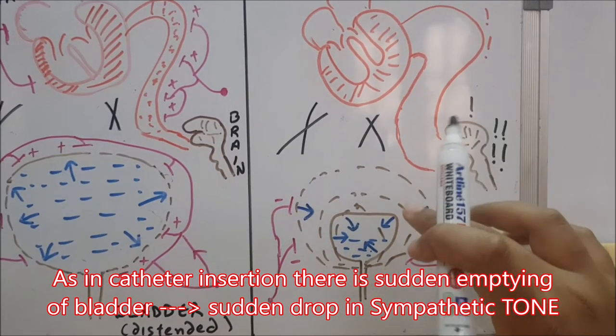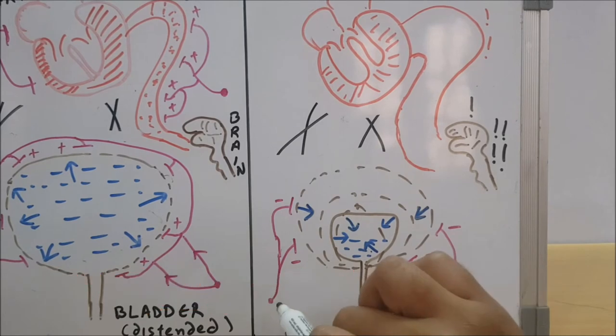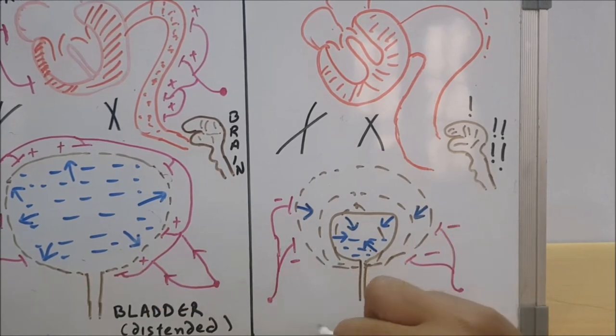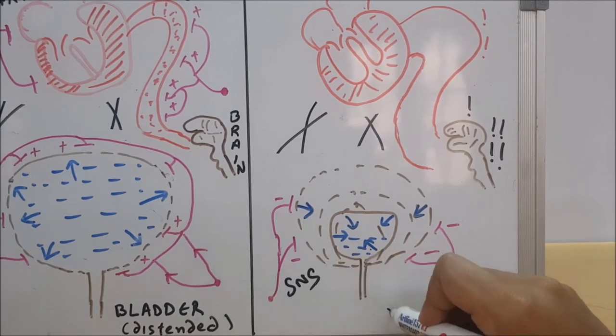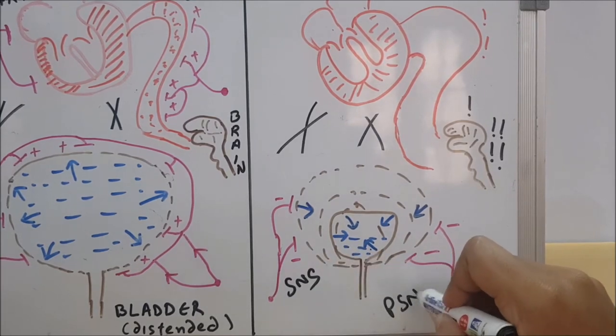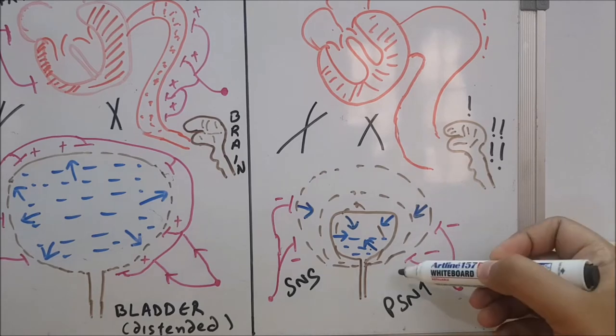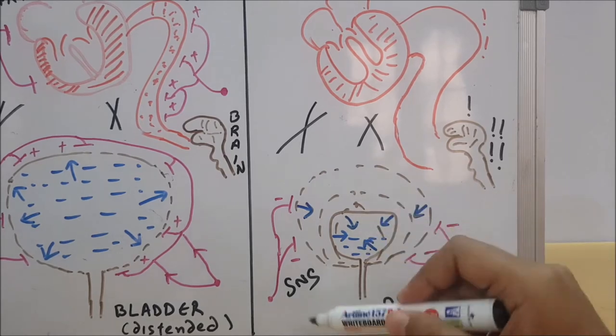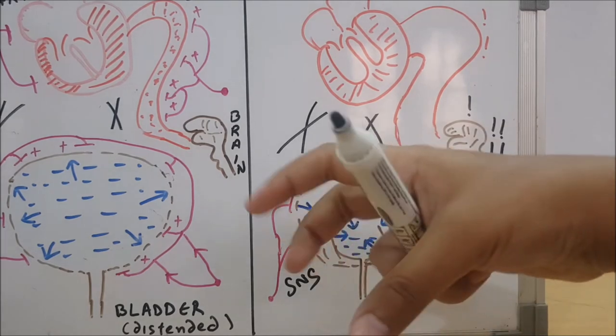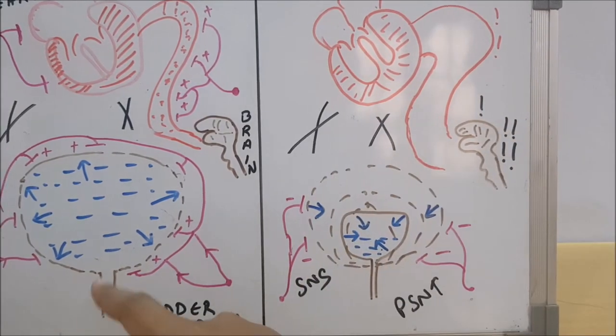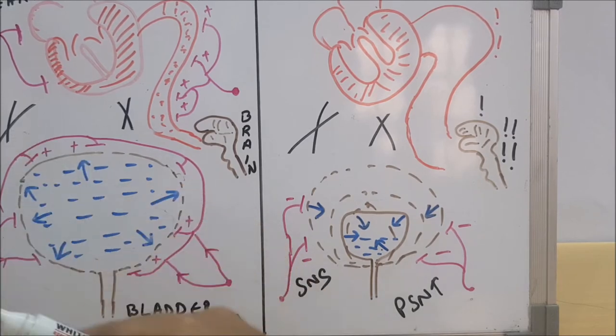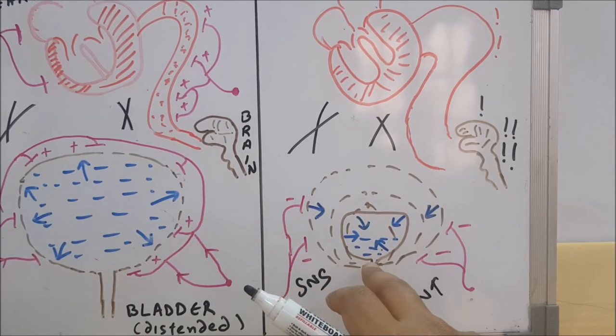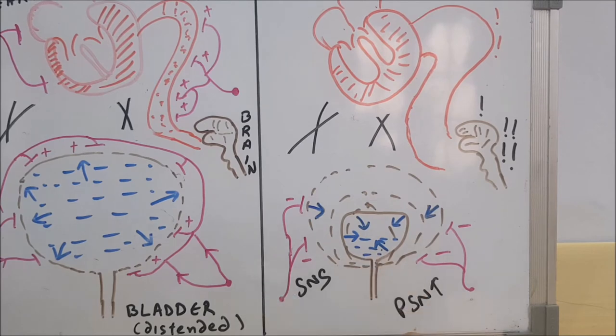Now as a person pees—this is a core concept, listen—the sympathetic tone will get decreased and the parasympathetic tone will increase. Why? Because it contracts a muscle so that urine may flow. Here you can see the pressure is outward. Urethral sphincter will relax, sympathetic tone will go down.